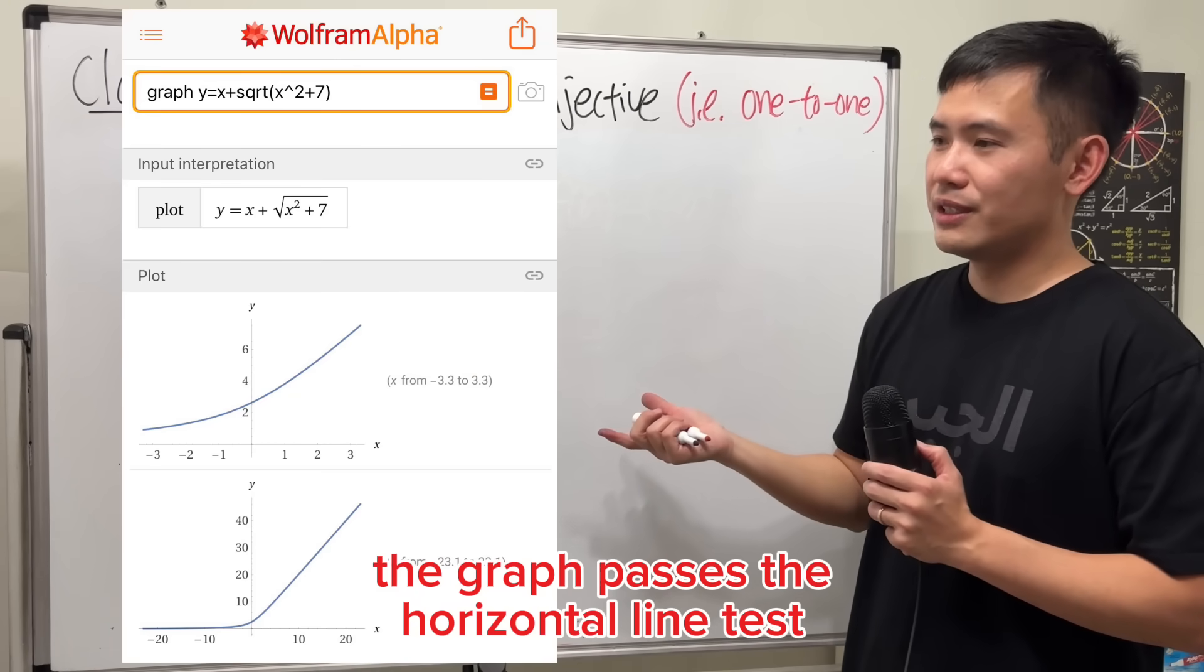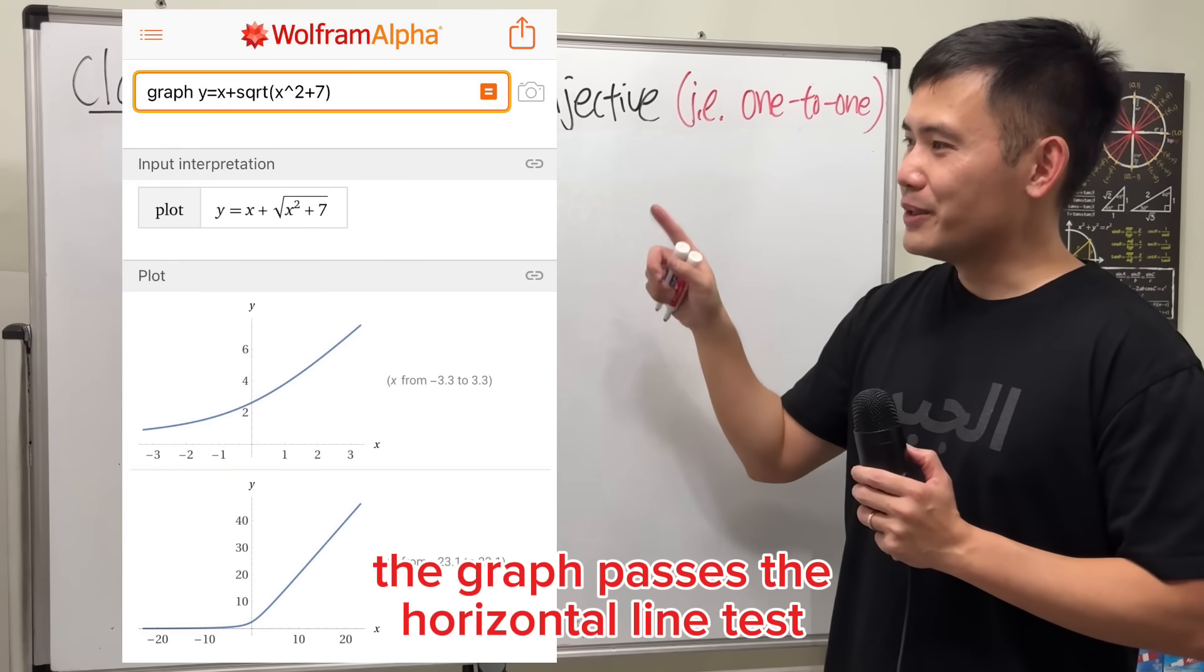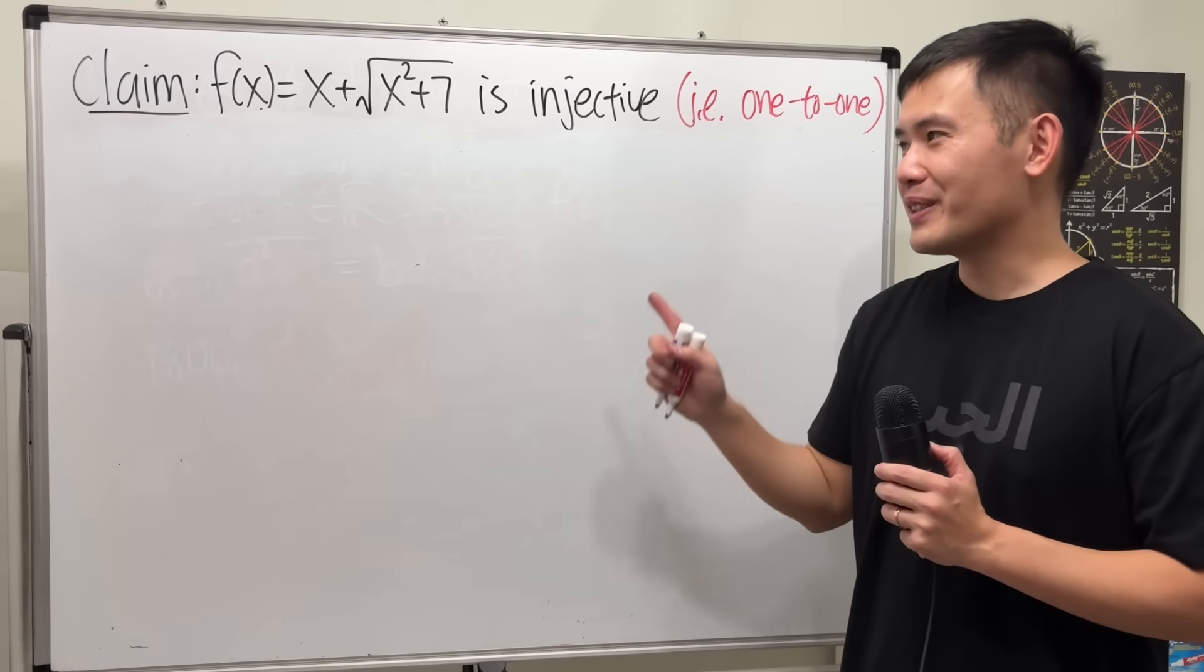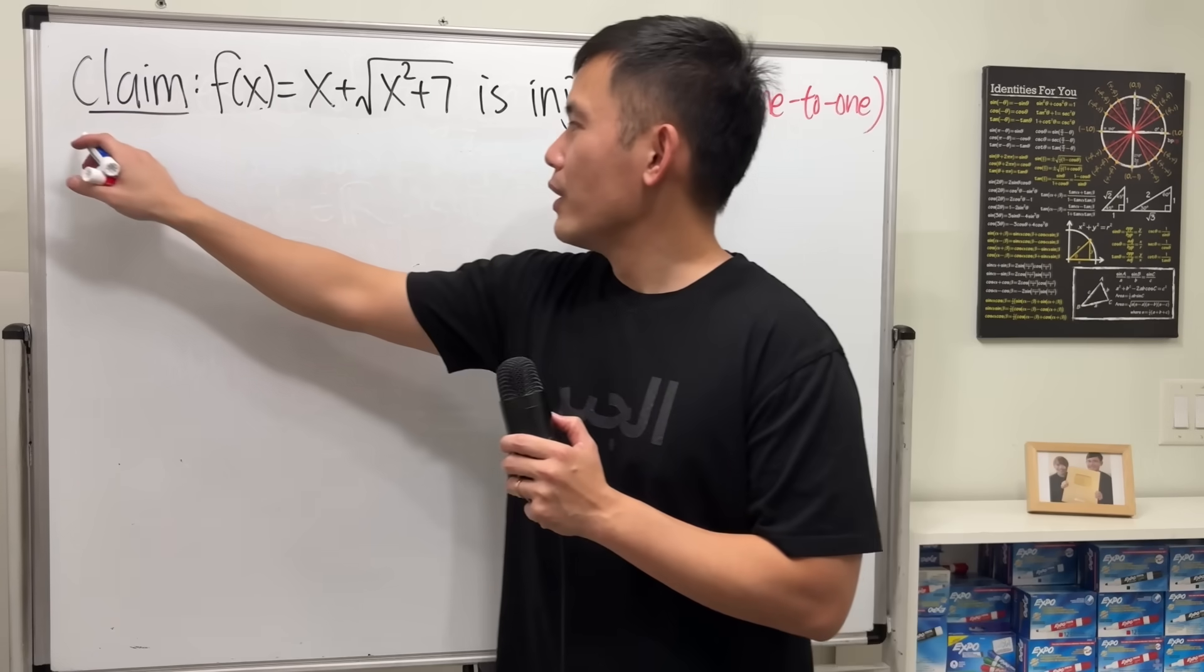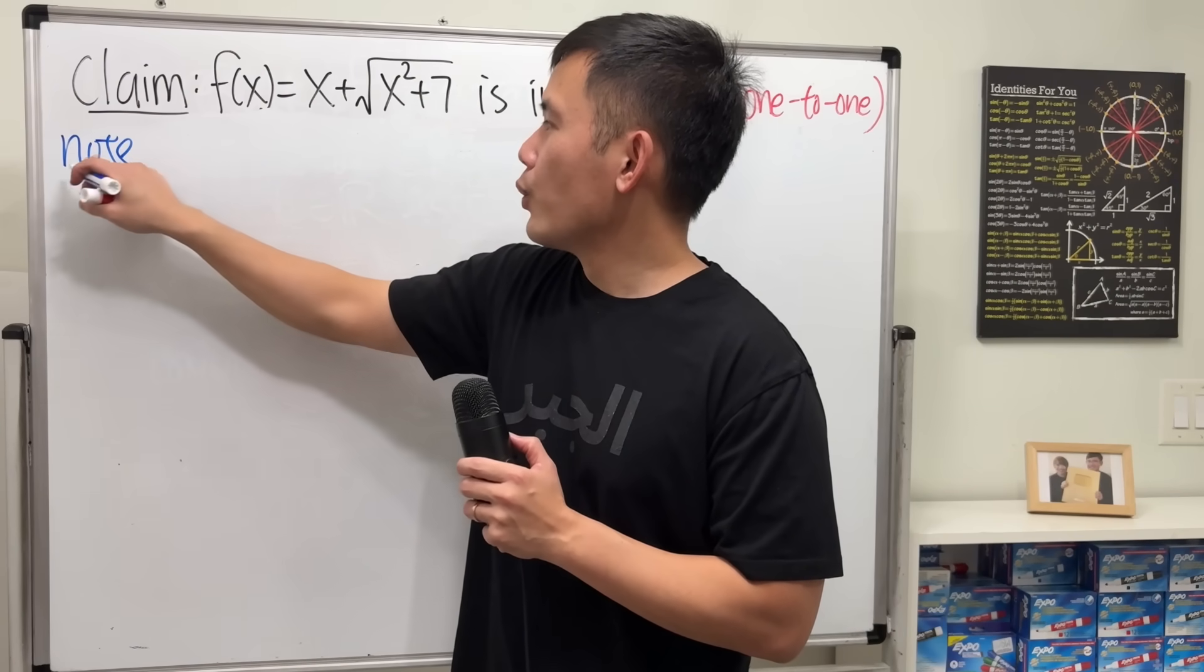You can take a look at the picture first. But of course, proof by looking at the picture is never enough. So we're going to see how to do it by using the definition. So firstly though, let's review what one-to-one means.